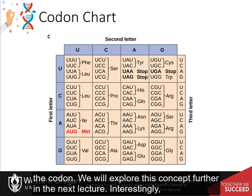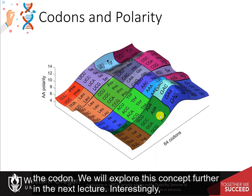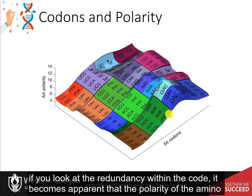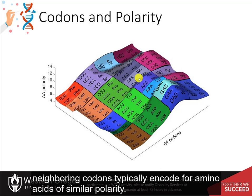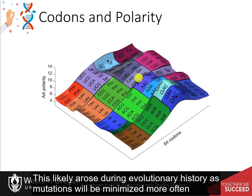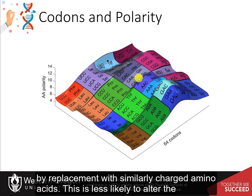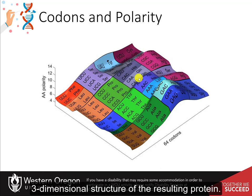We will explore this concept further in the next lecture. Interestingly, if you look at the redundancy within the code, it becomes apparent that the polarity of the amino acids encoded by the different codons has evolved such that neighboring codons typically encode for amino acids of similar polarity. This likely arose during evolutionary history, as mutations will be minimized more often by replacement with similarly charged amino acids, which is less likely to alter the three-dimensional structure of the resulting protein.